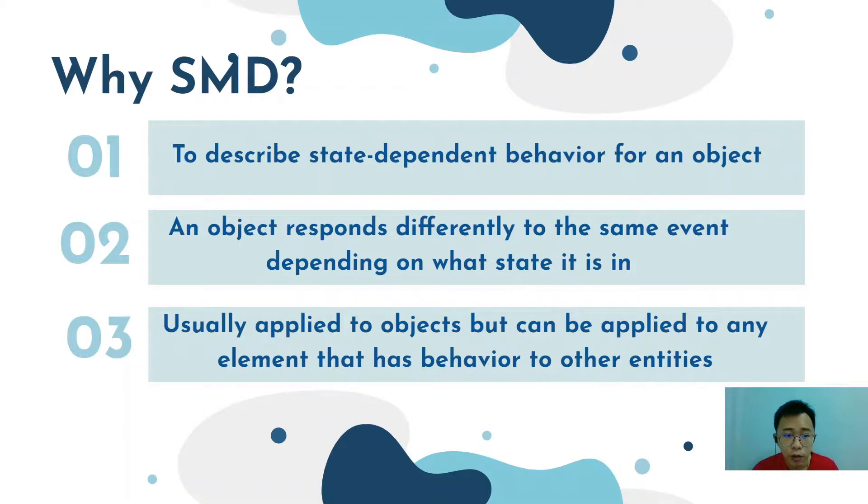Why do we use this state machine diagram? As I said before, this state machine diagram is mainly being used to describe those state dependent behavior for an object. This is because an object responds differently to the same event depending on currently what state it is in. And of course this state machine diagram is not only being applied on the object, but it also can be applied to any elements that have a behavior to the other entities. For example, there are use cases, methods, and also some like subsystems. So that's the brief. I now pass it to my friend.